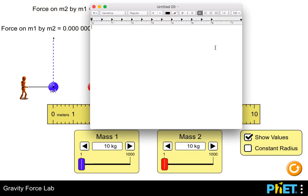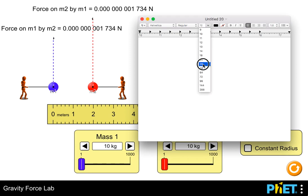Instead of just recording this number as 0.0000 etc. newtons, I'm going to record this number as 1.734 times 10 to the negative 9 newtons.